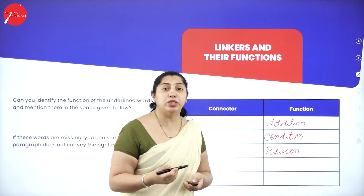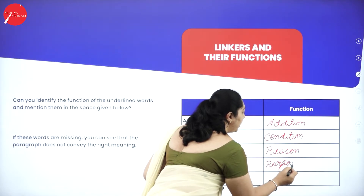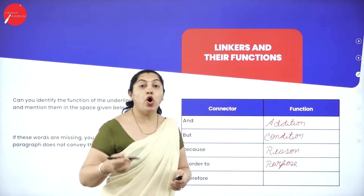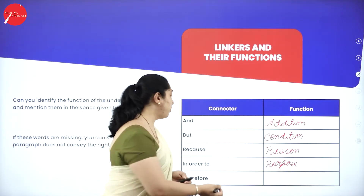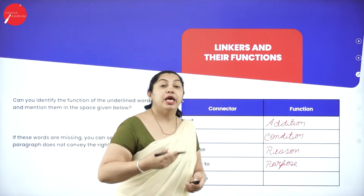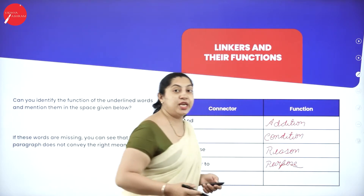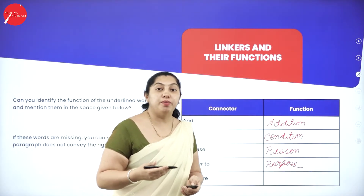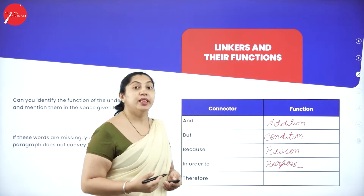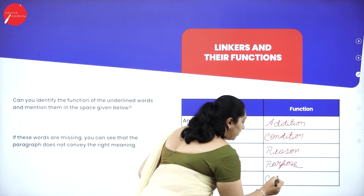The next linker is 'in order to.' When do we use 'in order to'? It is used for purpose. For example: 'In order to get good marks, I studied hard.' The purpose of working hard is to get good marks. So 'in order to' is used when expressing a purpose — if I want to get good marks, I need to study well and work hard.